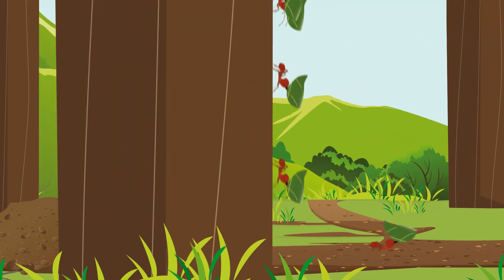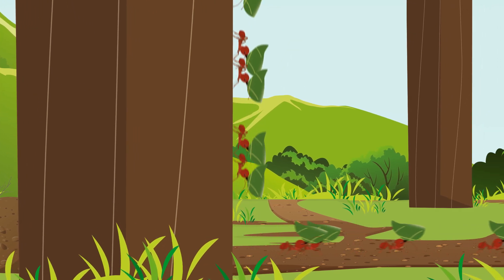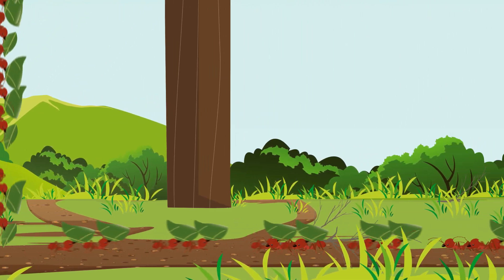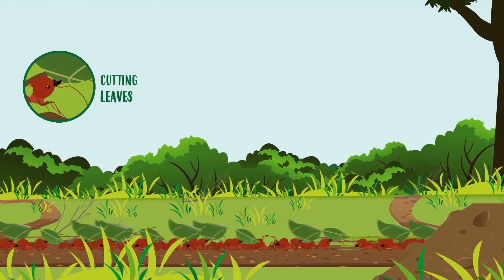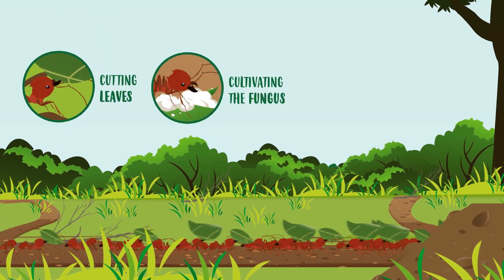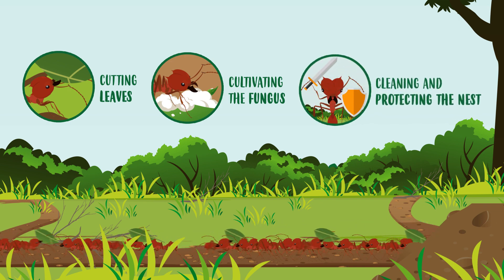These ants live in organized societies. Like soldiers in a well-trained army, each ant has their own specific job. For example, some cut leaves from trees to cultivate the fungus they eat, while others clean and protect their nest.